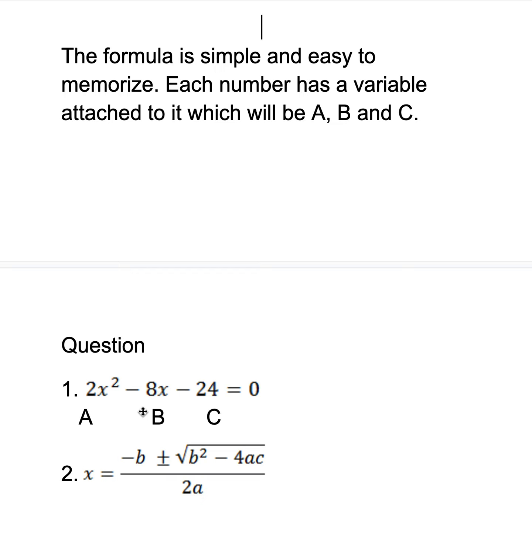2 multiplied by negative 24. Then dividing by 2 multiplied by 2. You have to place the formula correctly and put the values in order. Now let's get into the actual calculation.